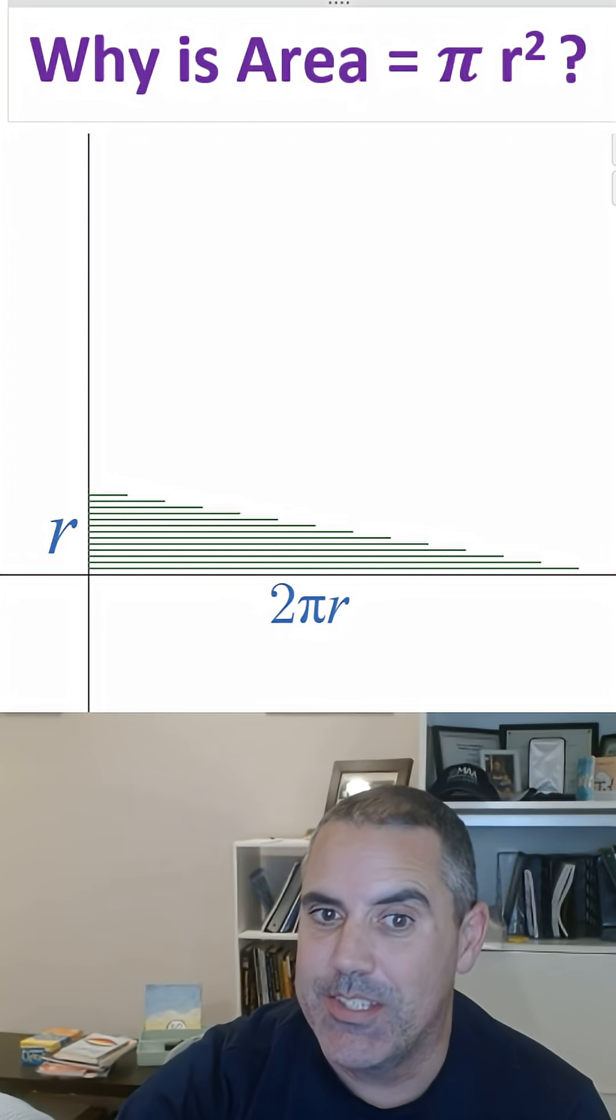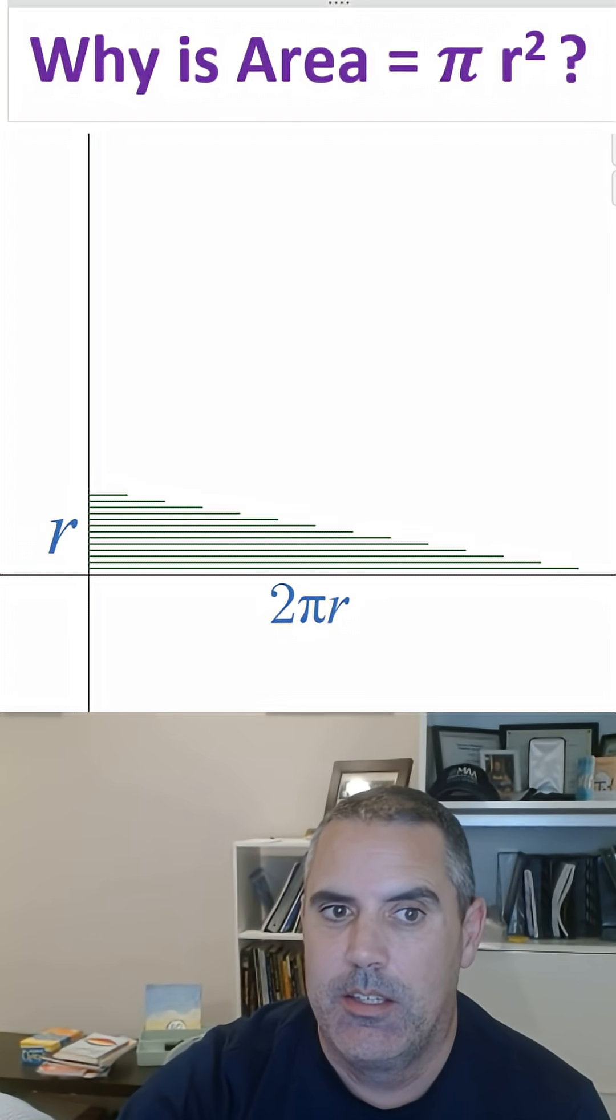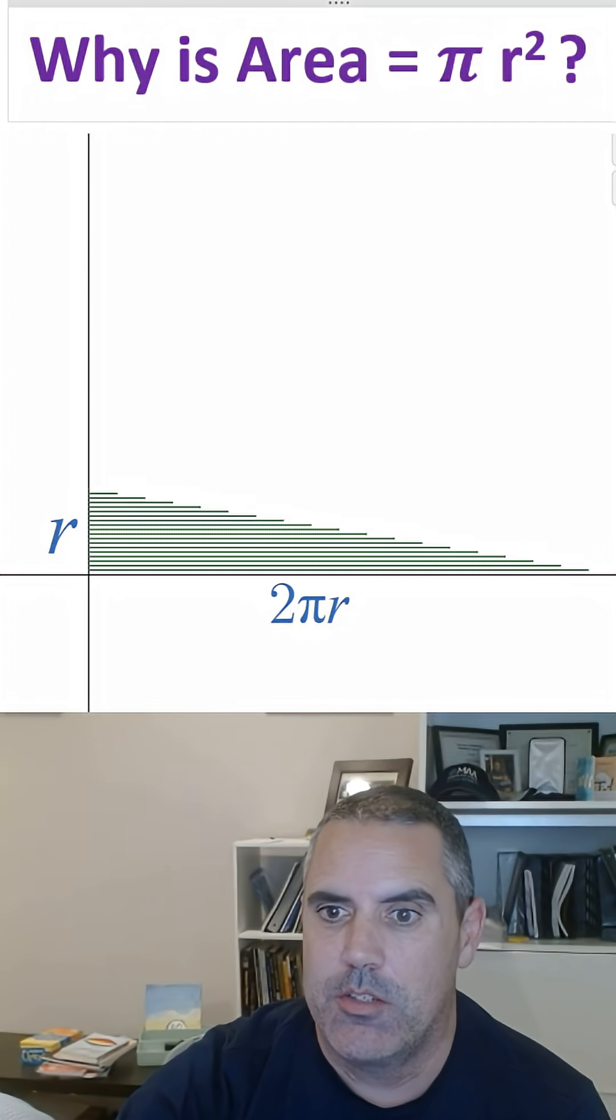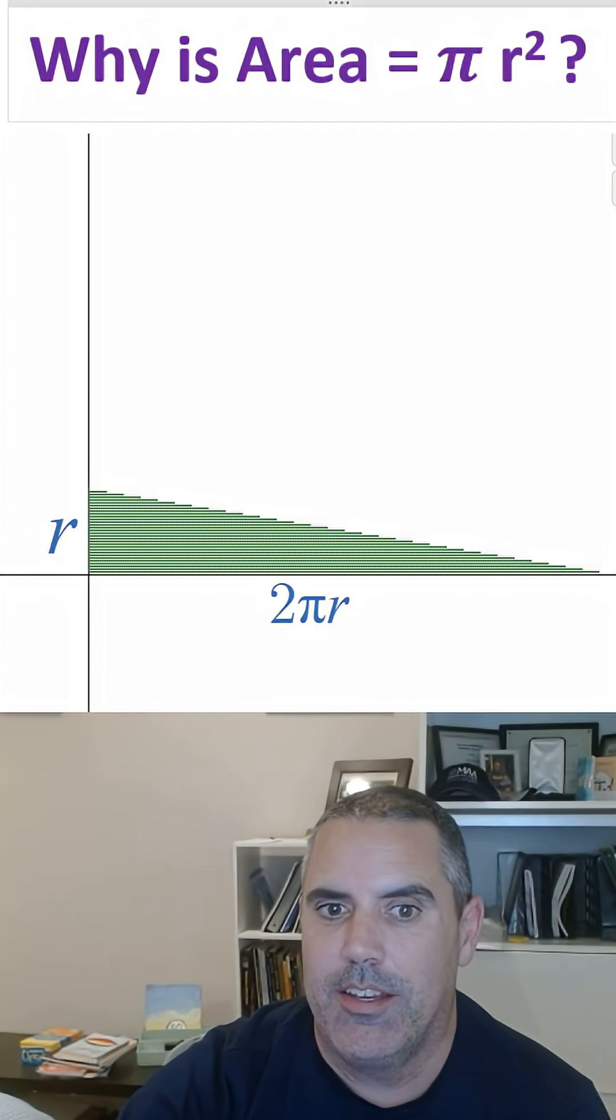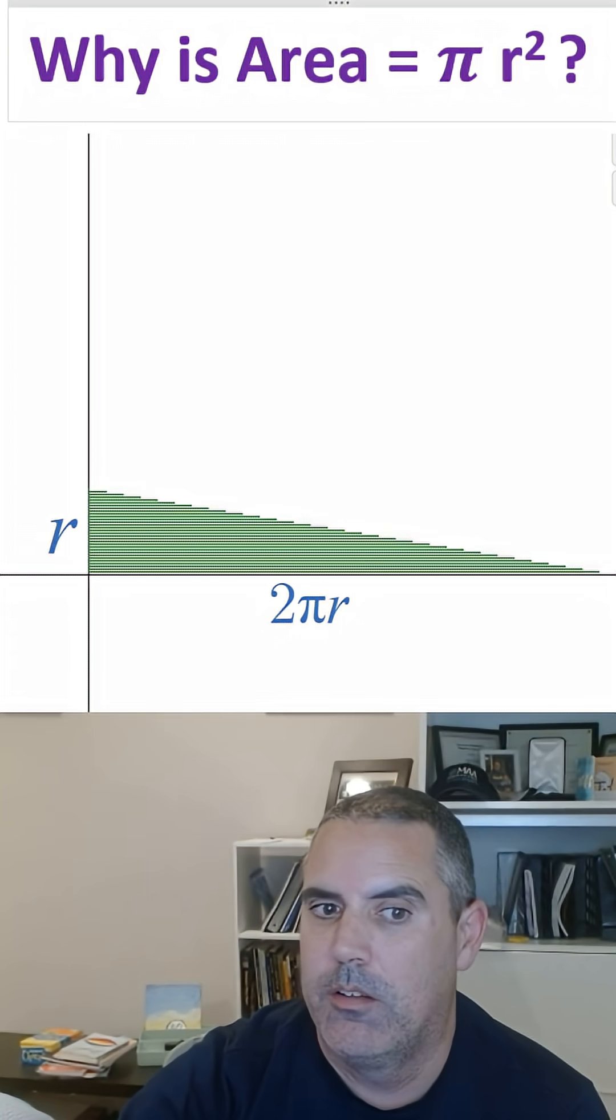And that's it. This is basically the full derivation. If you unroll a circle like this and you put more and more subdivisions, it looks an awful lot like a triangle. What is the area of that triangle? Let me show you. Area of a triangle is one half base times height.